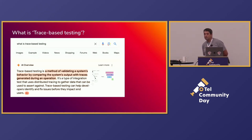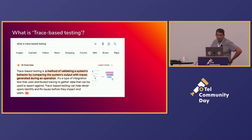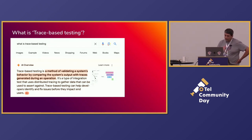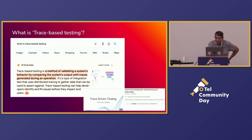I don't have to explain to this group what observability is and what a trace is, but what is trace-based testing? AI basically says it's validating a system's behavior by comparing systems output with traces generated — so it's allowing you to assert against spans that are in a trace. You'd think this is a brand new concept until you check YouTube — Ted Jung five years ago talked about trace-driven development, utilizing testing and observability. So it's not a new concept.